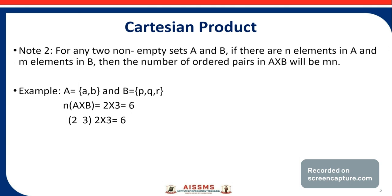One more important note: for any two non-empty sets A and B, if there are n elements in A and m elements in B, then the number of ordered pairs in A × B will be m × n.